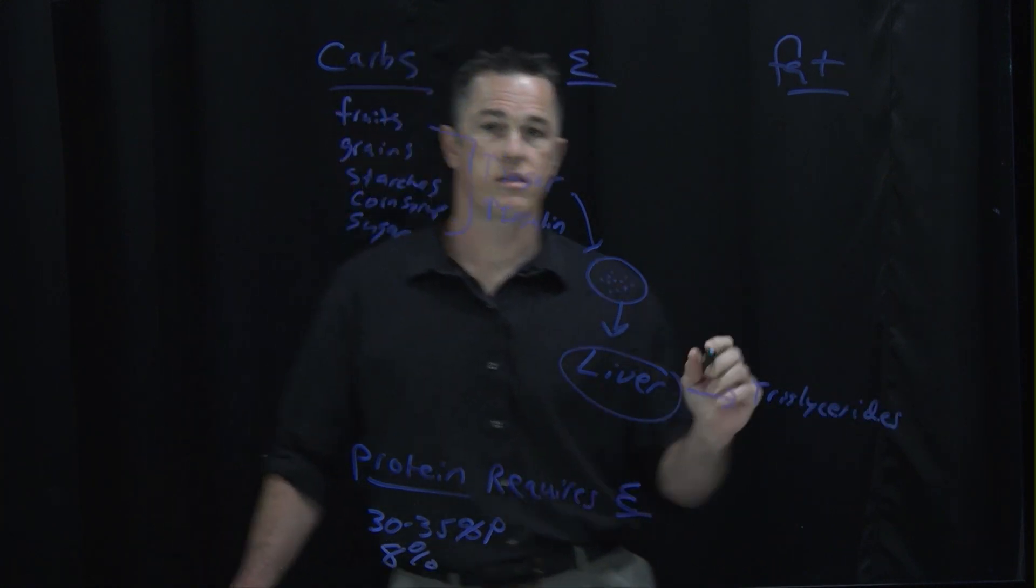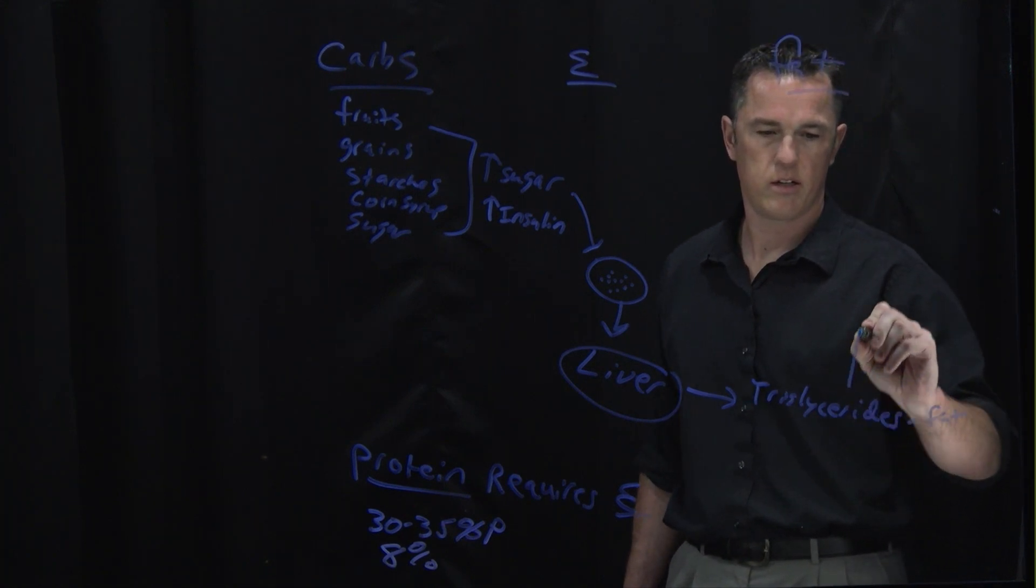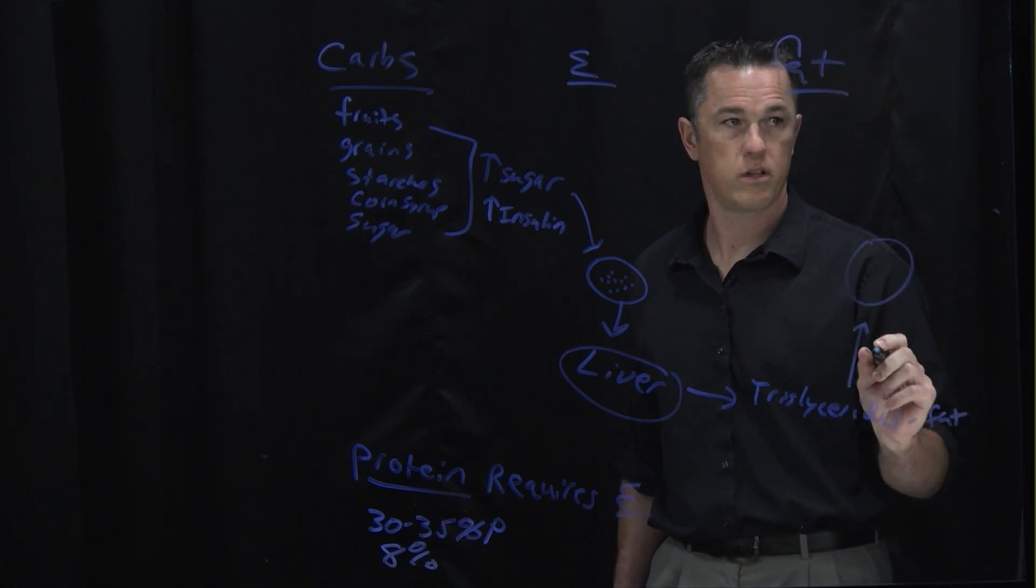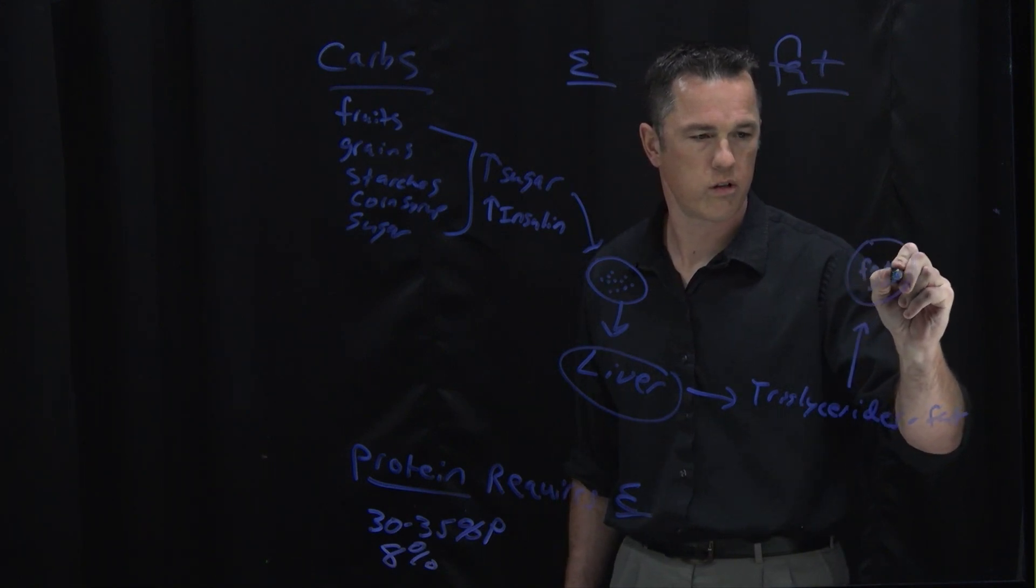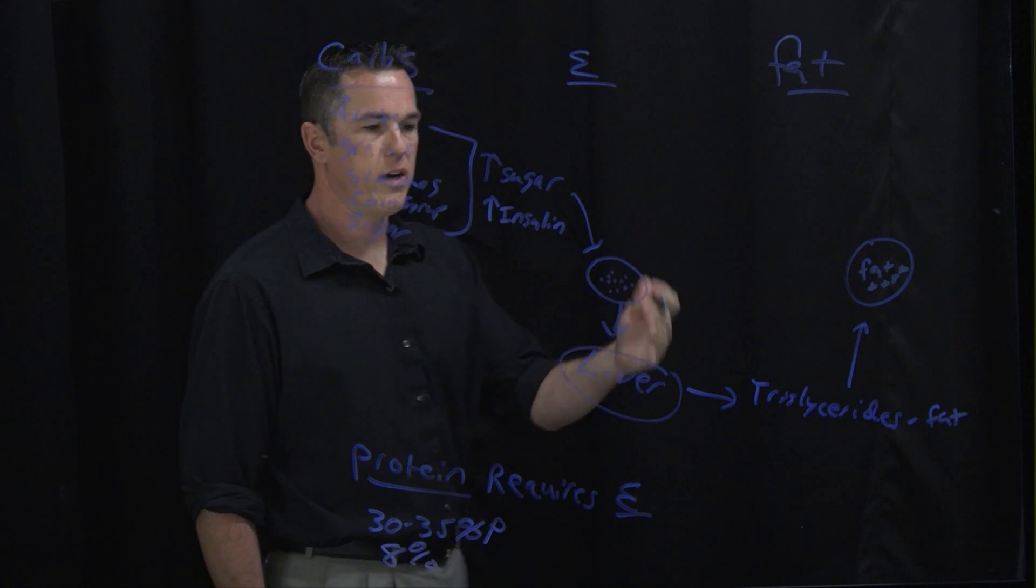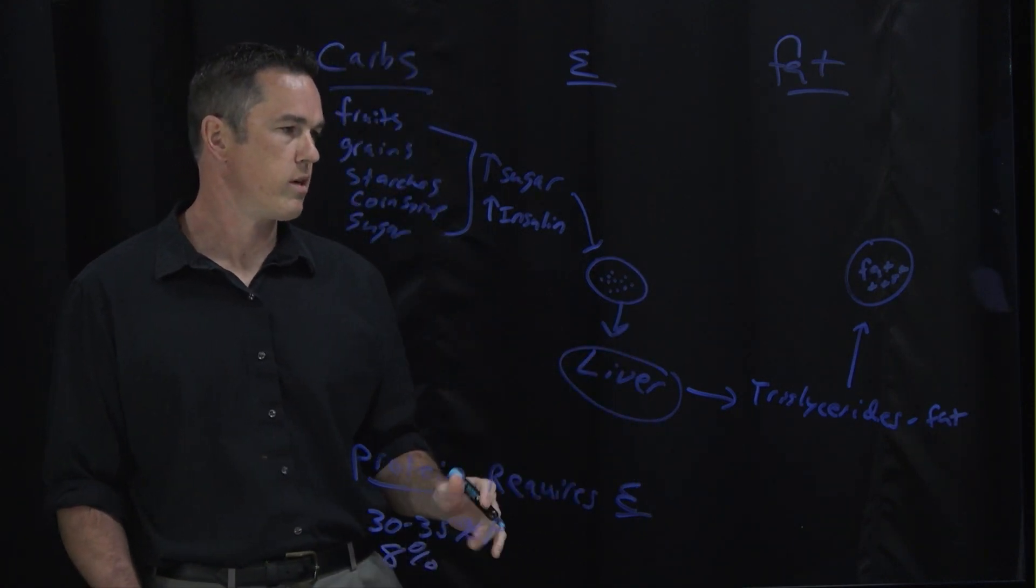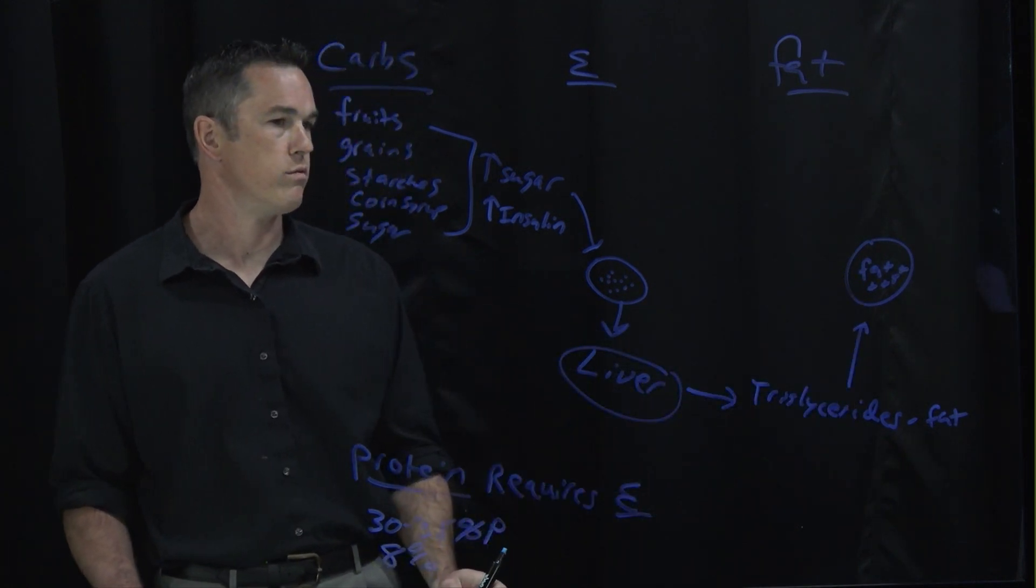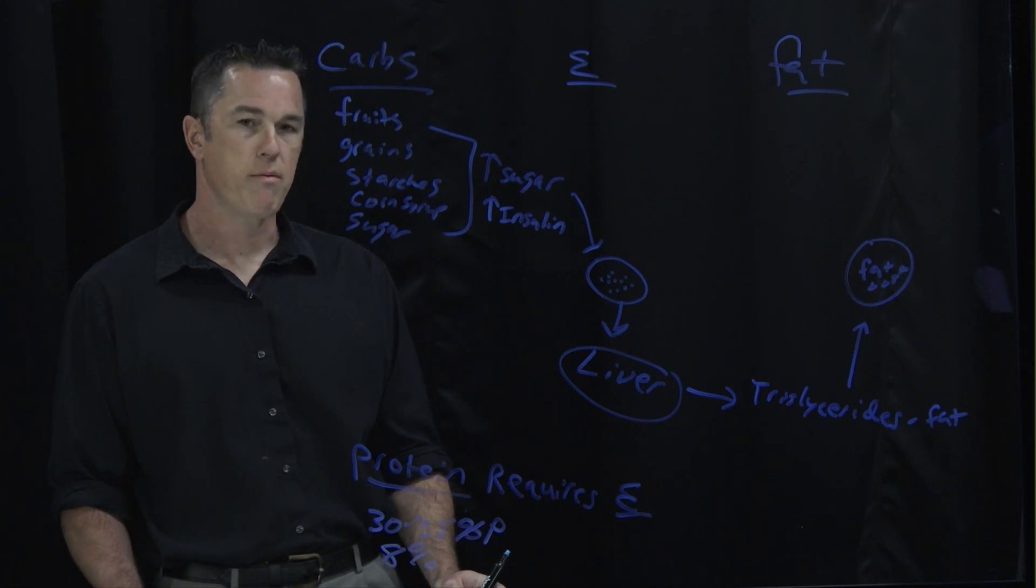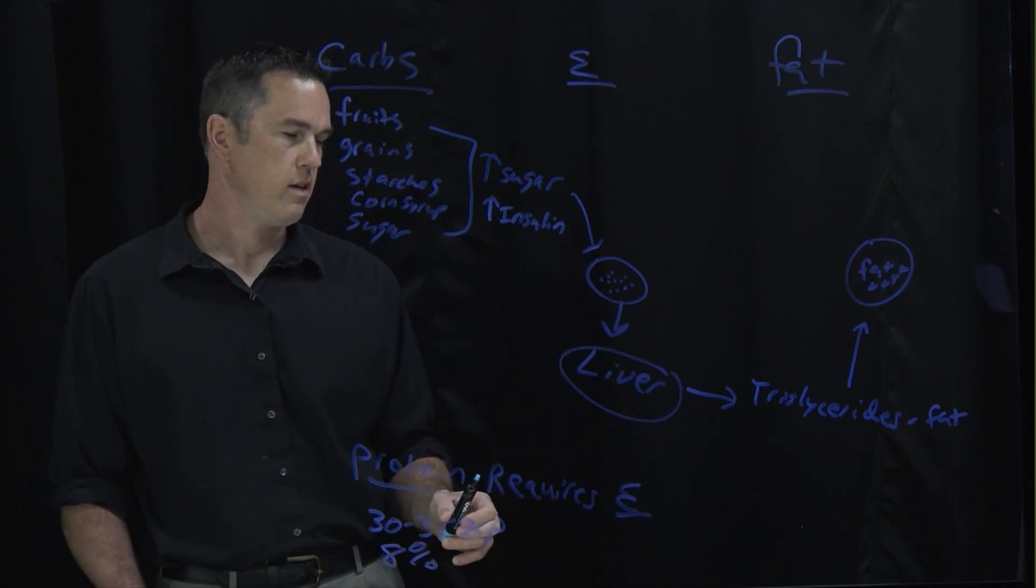Now triglycerides are basically just fat in your blood. These will get sent to your fat cells where they're stored. And then when you go to bed overnight and you get up in the morning and you skip your breakfast because you're in too big of a hurry, what should happen is your body pulls some of these triglycerides out and uses them as a fuel. The problem in America though is most people don't go without food. And so we're constantly driving this.